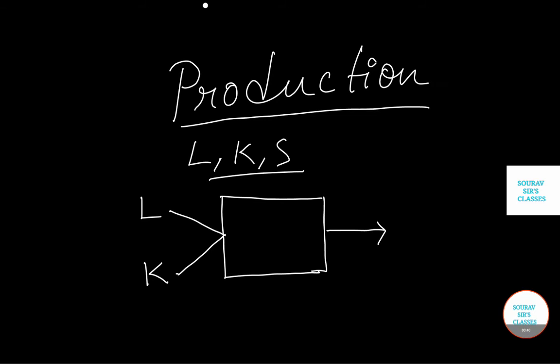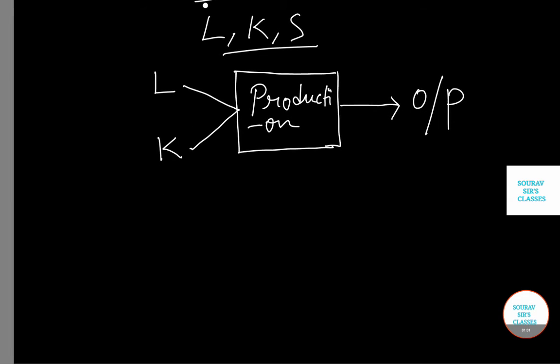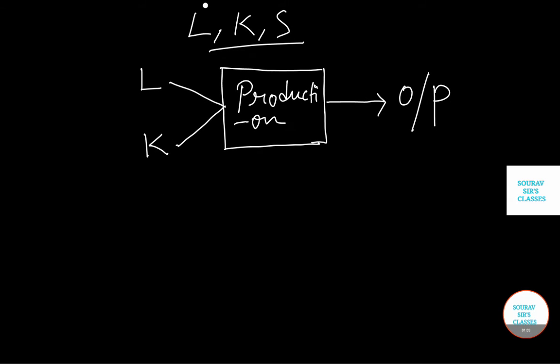This labour and capital will turn into an output, and this form of transformation occurs through the production process. So basically production may be defined as a process by which inputs are transformed into output. An input is any good or service transformed into output, and an output is any good that comes out of the production process.